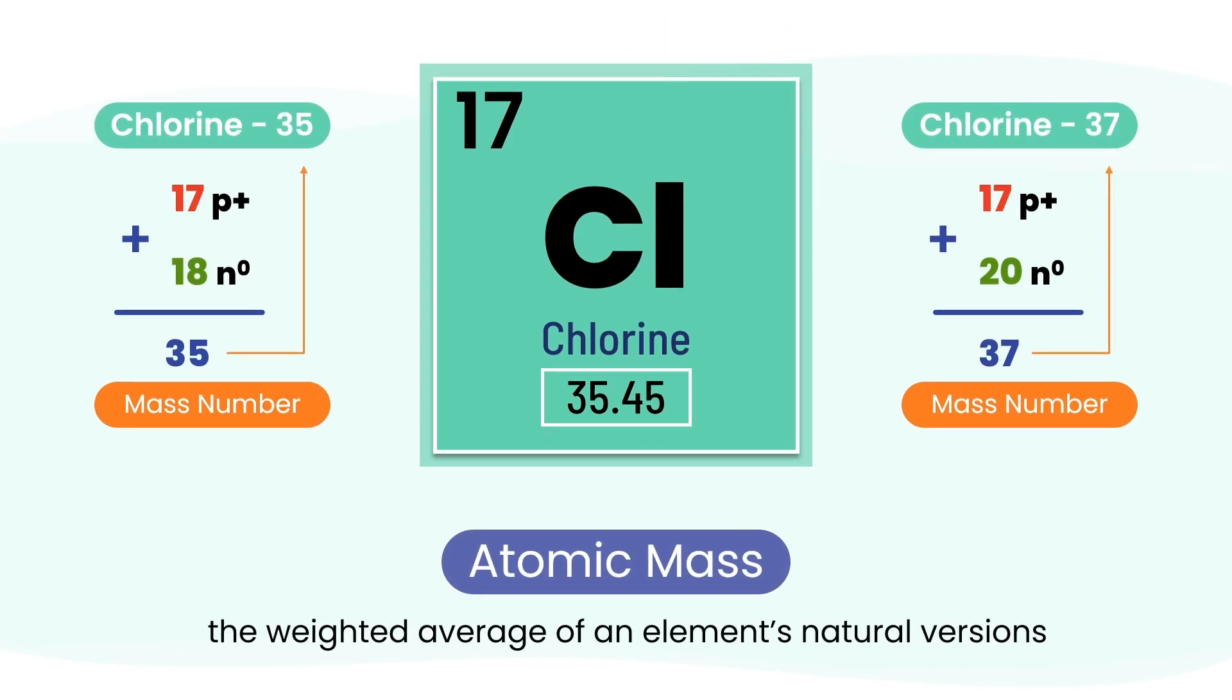The atomic mass is the average mass of all the naturally occurring isotopes of an element. Since it's an average, it usually comes out as a decimal.